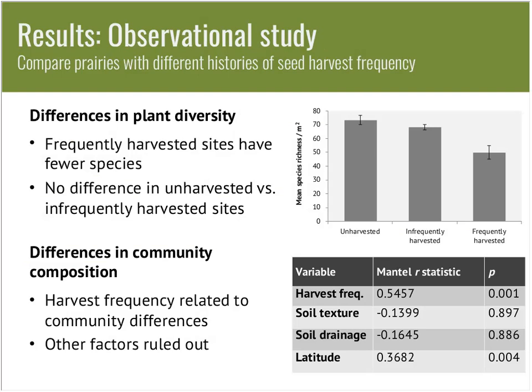So what did we find? We did find some differences in diversity. Harvest frequency is on the x-axis and species richness per quadrat on the y-axis. There's no difference between unharvested and infrequently harvested sites, but the frequently harvested sites definitely had fewer species. I also found some differences in community composition — Mantel tests showed that harvest frequency was related to community differences, but other environmental variables were not or were controlled for during the sampling design.